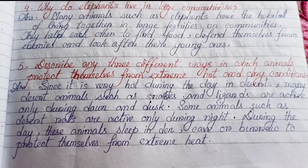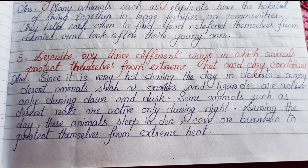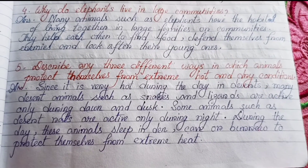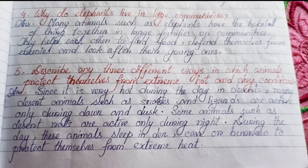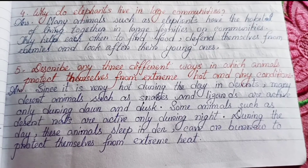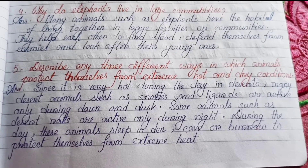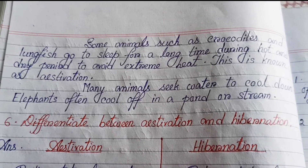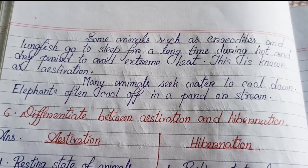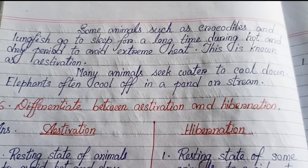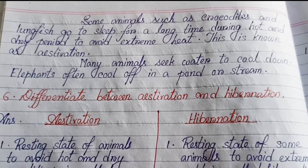Number five — Describe any three different ways in which animals protect themselves from extreme hot and dry conditions. Since it is very hot during the day in deserts, many desert animals such as snakes and lizards are active only during dawn and dusk. Some animals such as desert rats are active only during night; during the day they sleep in dens, caves, or burrows to protect themselves from extreme heat. Some animals such as crocodiles and lungfish go to sleep for a long time during hot and dry periods — this is known as estivation. Many animals seek water to cool down; elephants often cool off in a pond or stream.